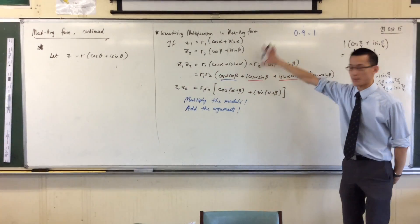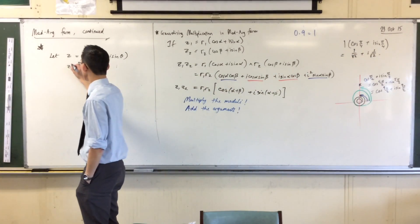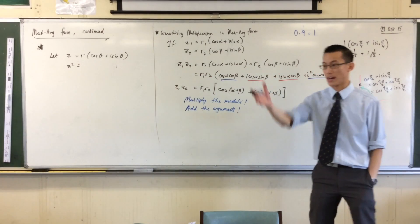Using this principle of multiplying the moduli and adding the arguments, what's z squared? First we'll do the moduli.